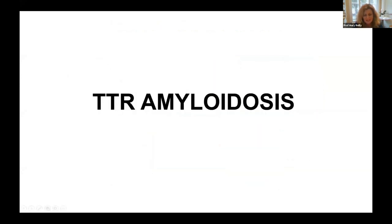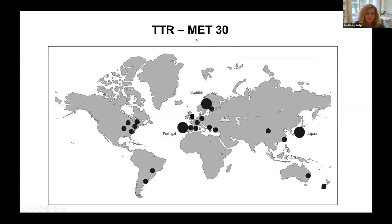There are multiple different TTR mutations. The commonest is called the TTR-MF30 mutation, originally described in Portugal in 1952, but there are big clusters in Sweden, Japan, and Brazil, and individual patients in many other countries including the UK. This is the commonest gene that has spread around the world, and also the commonest mutation to occur independently in different populations. Patients — particularly Portuguese patients — are usually younger when they get the disease, in their 20s and 30s, and it's often predominantly neuropathy.